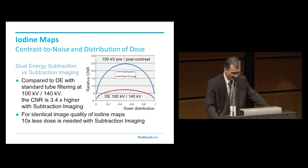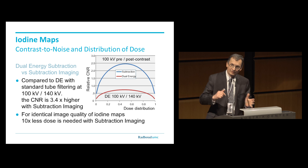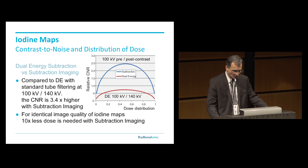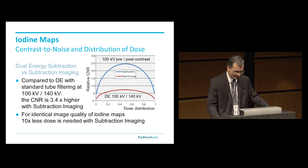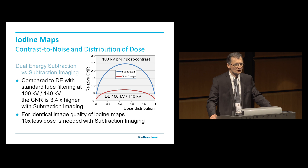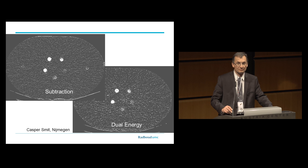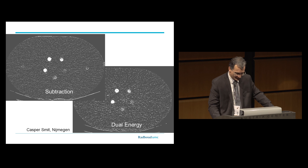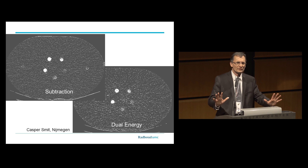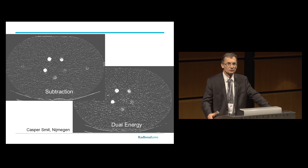This is a dual energy acquisition. You see that the signal-to-noise ratio remains relatively low. If you compare that to a subtraction image, it is much, much higher. It basically means that you can make sure that the pre-contrast image has a relatively low dose, let's say 0.2, which means 20% of the dose goes to the pre-contrast and 80% goes to the post-contrast, and you still get a signal-to-noise level substantially higher than what you would expect from dual energy. Both of these images require image processing to recover image quality.